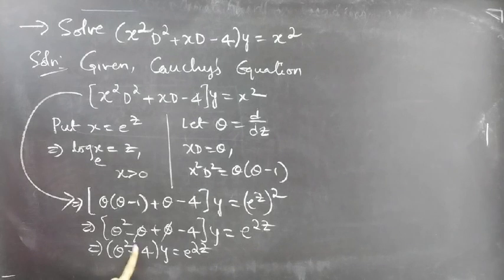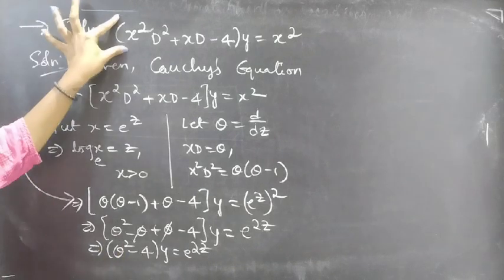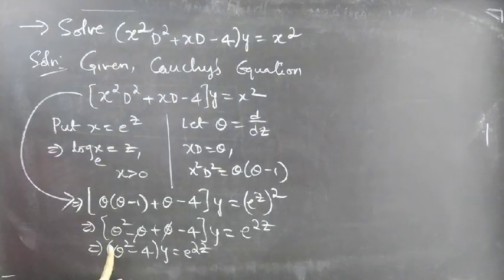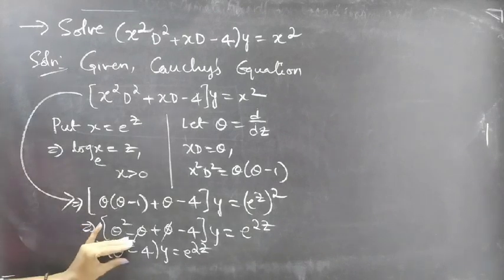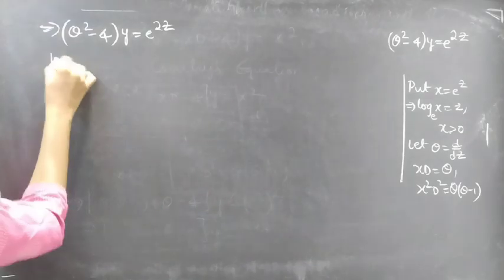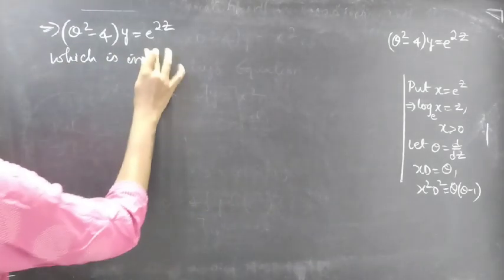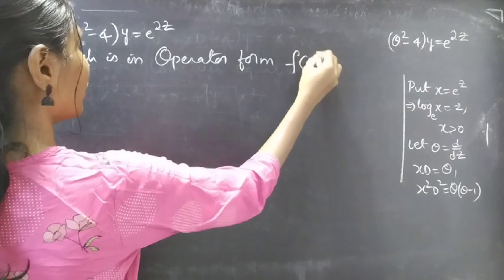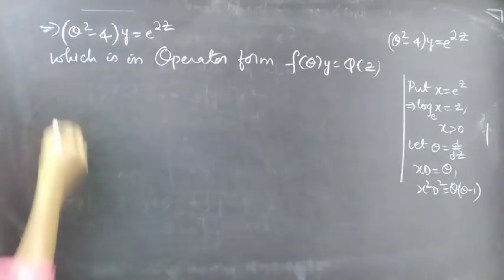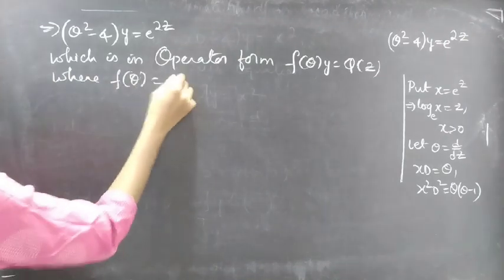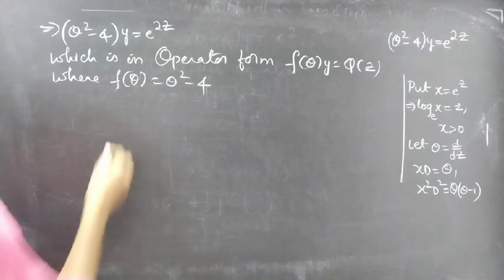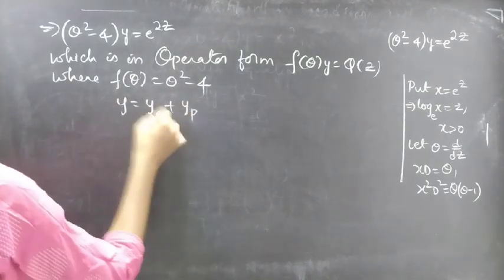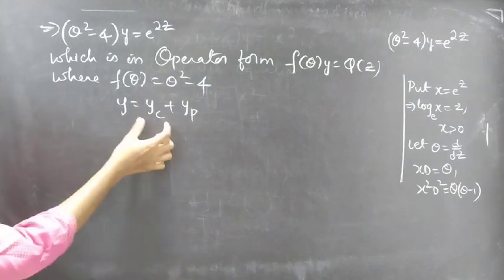This is a differential equation with constant coefficients. We have reduced the given differential equation with variable coefficients to a differential equation with constant coefficients. This is in operator form: f of theta into y equals Q of z, where f of theta equals theta squared minus 4. Now we need to find the general solution y equals yc plus yp.